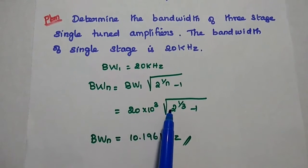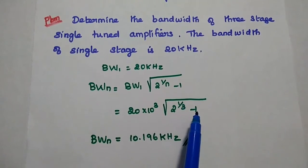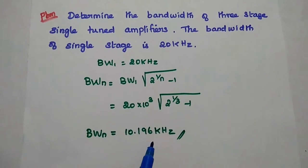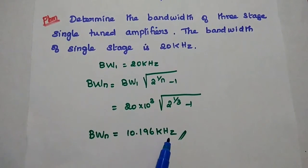So 20 into 10 to the power 3, square root of 2 power 1 by 3 minus 1. The answer is 10.196 kilohertz.